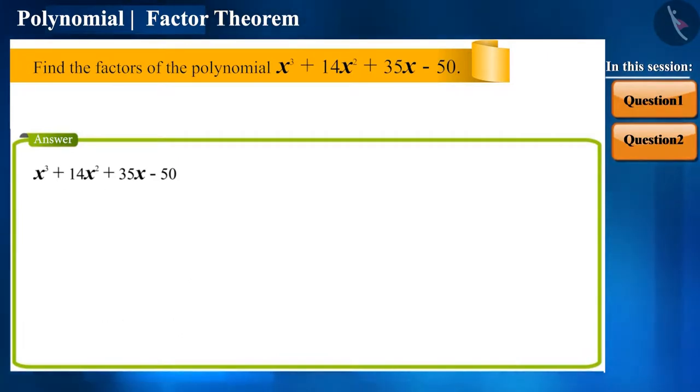If this polynomial had minus x square after the first term, then after taking out the common x square, we will be able to write like this. But here, instead of minus x square, we have 14 x square. So now what? We will subtract and add x square once from x cube.